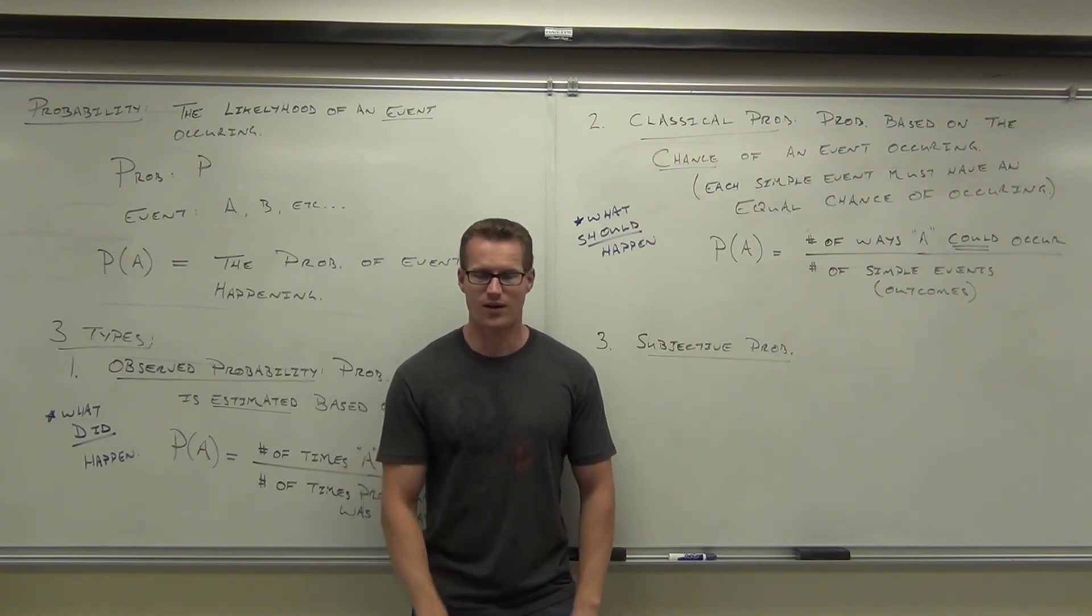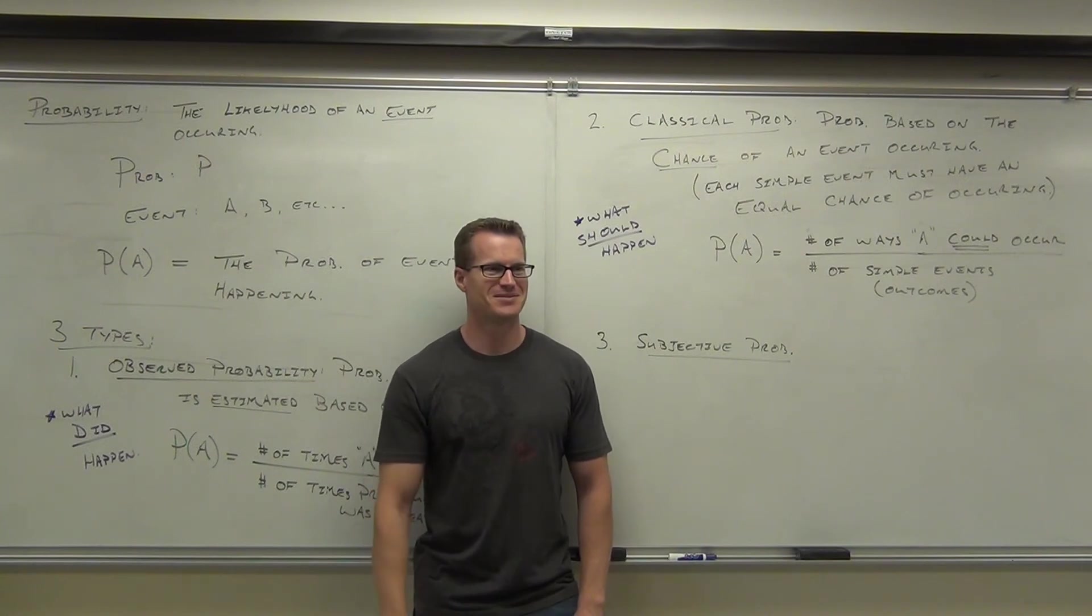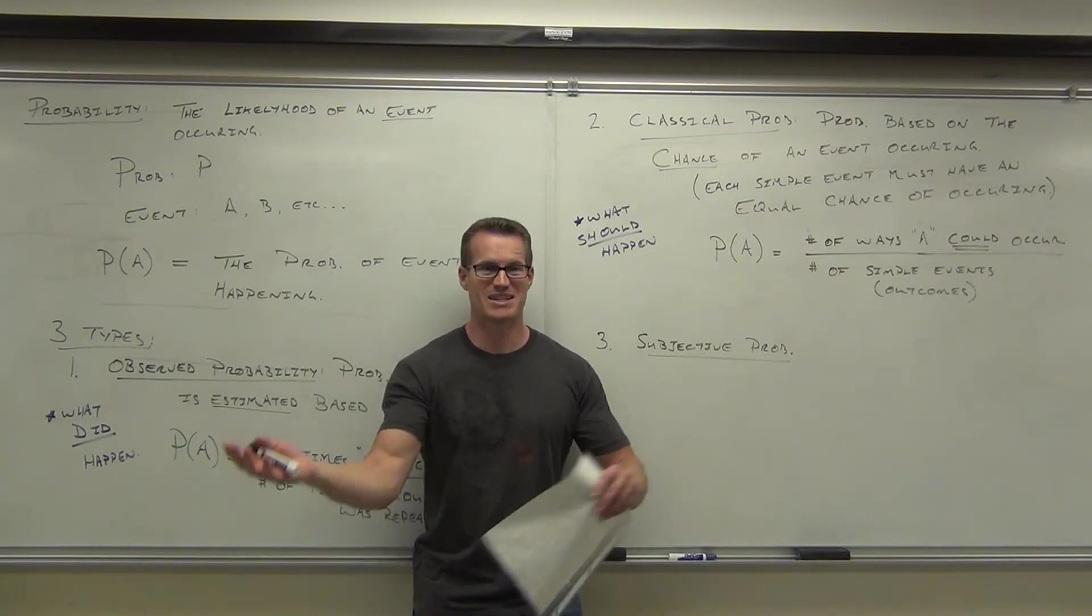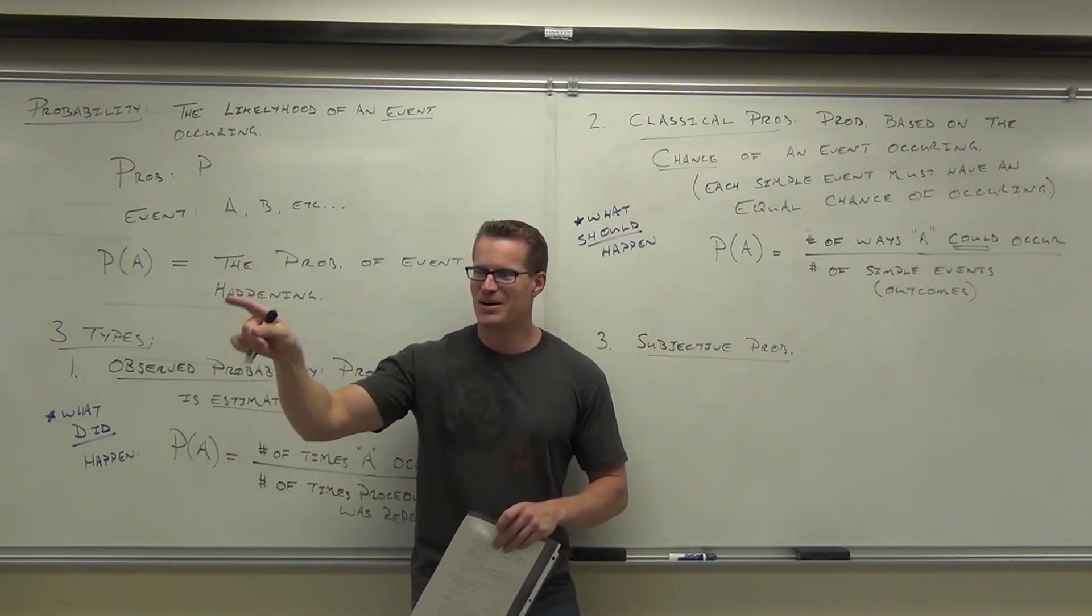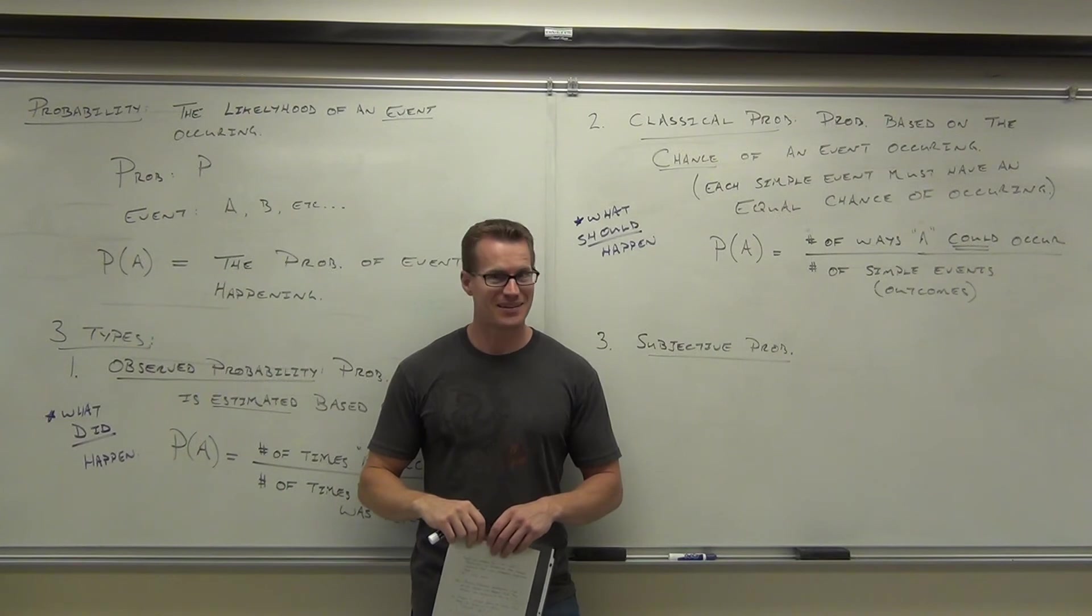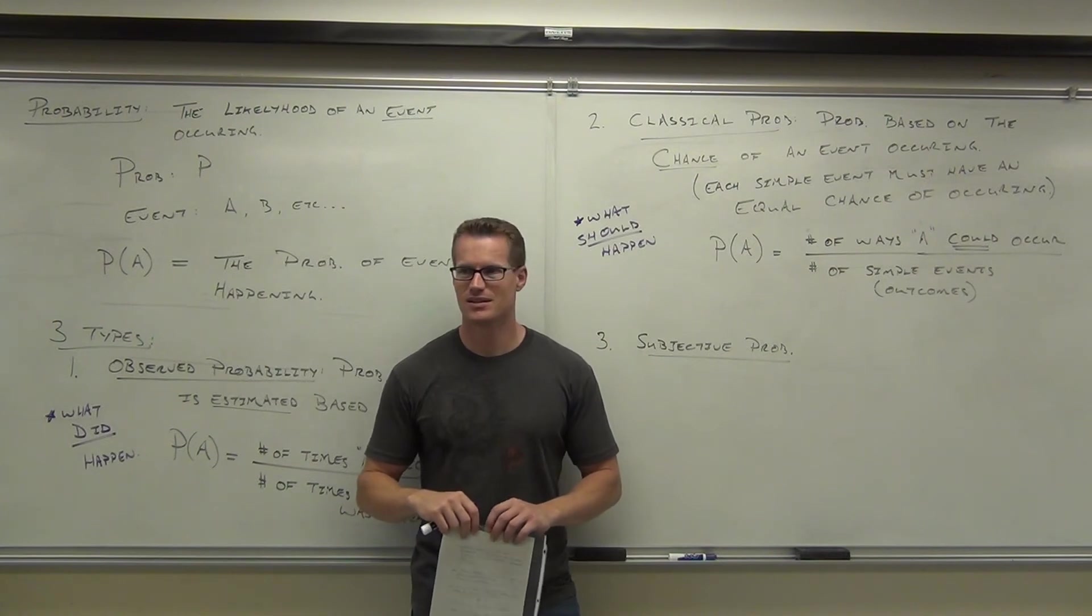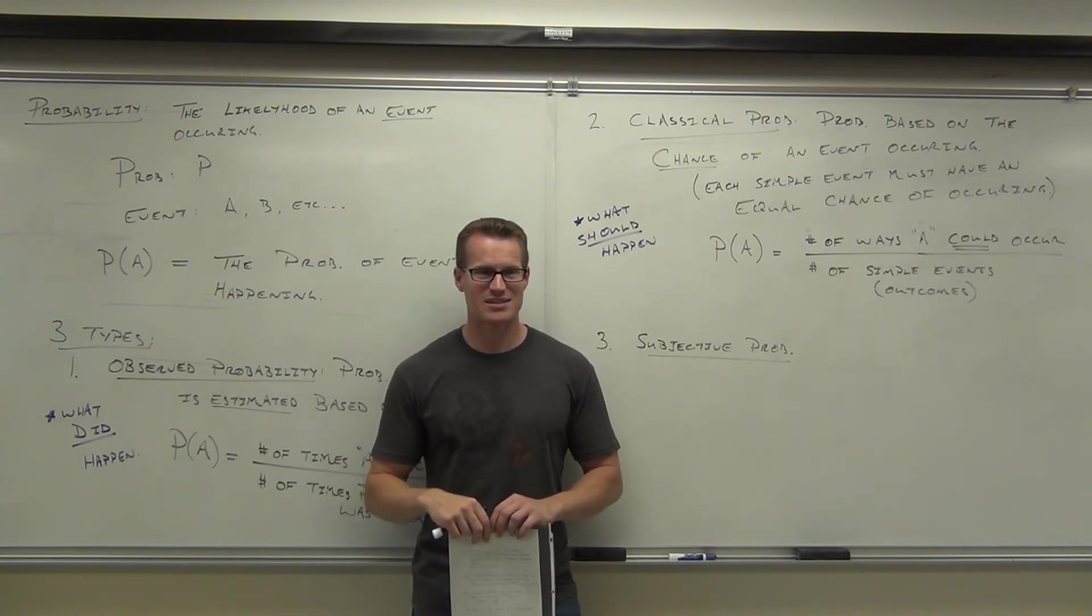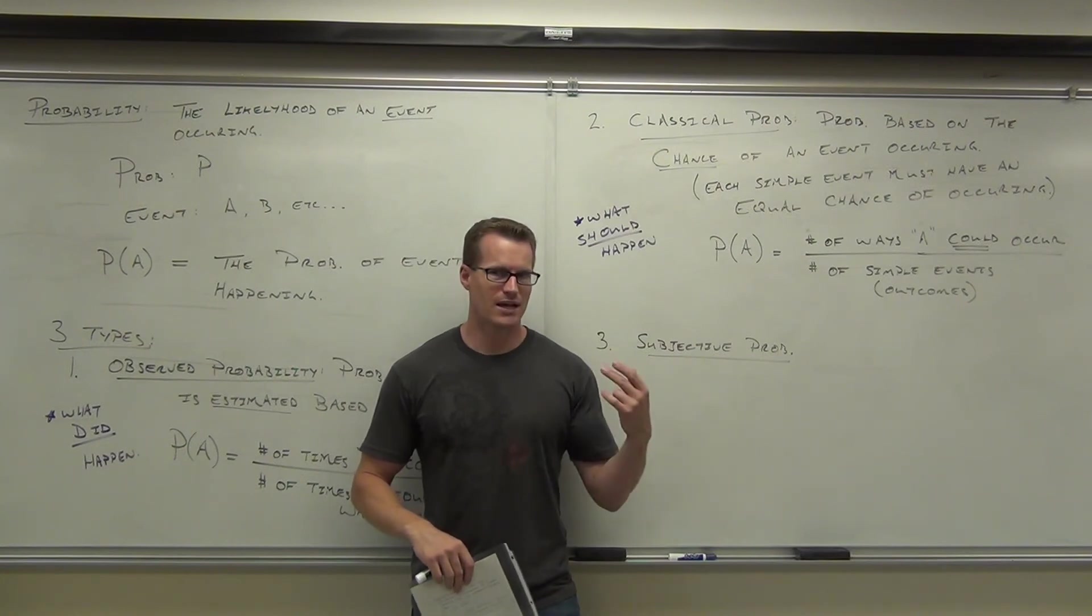How about this one? What are the chances right now that I'm going to walk out that door and get hit by a meteor? You might want this to happen, but you probably wouldn't because you'd get taken with me since we're in the same building. So if I walk out that door, what are the chances I'm going to get hit by a meteor? 90%? Probably not. Maybe 0.000000 forever and then a little one at the end, maybe. But the point is that it's neither classical nor subjective.